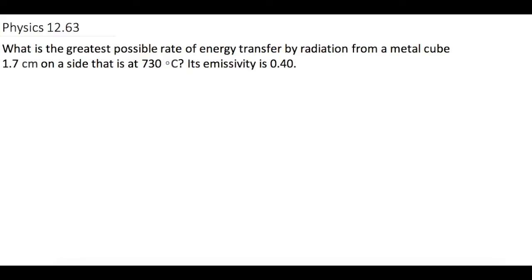The formula for radiation is Q over delta T equals the emissivity of the thing that we're looking at.